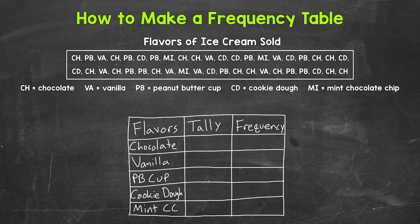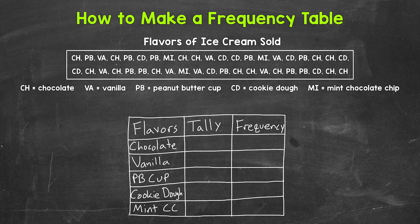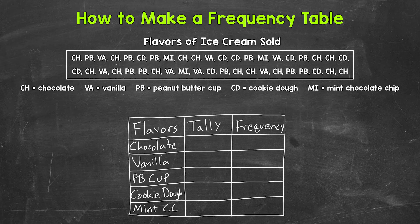Now we can work through the data and find each frequency — the number of times each flavor occurs within the data. We can work through this different ways. For example, we can go one by one, working from left to right and tallying one flavor at a time, or we can tally multiple flavors at a time. Another option is to tally all of one flavor and then move on to the next flavor. There are multiple options — do whatever works best for you. I'm going to work from left to right and tally multiple flavors at one time.